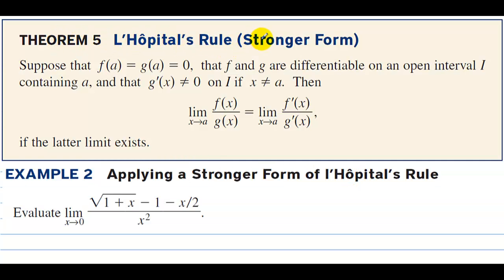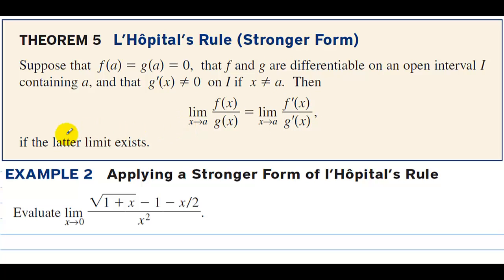In Theorem 5, we have L'Hopital's Rule in stronger form. Suppose that f(a) equals g(a) and they both equal 0, that f and g are differentiable on the open interval I containing a, and that the derivative of g does not equal 0 on I if x does not equal a. Then the limit of f over g equals the limit as x approaches a of f' over g' — meaning we can just keep taking derivatives, if the latter limit exists.